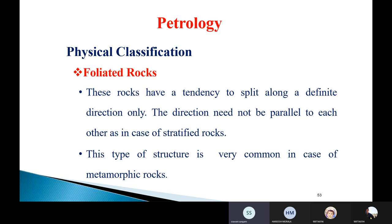In stratified rocks the break process is parallel, but in foliated rocks it need not be parallel — it may be in an uneven or perpendicular direction. These rocks can break in different directions. Foliated rocks are commonly observed in metamorphic rocks such as gneiss and schist.